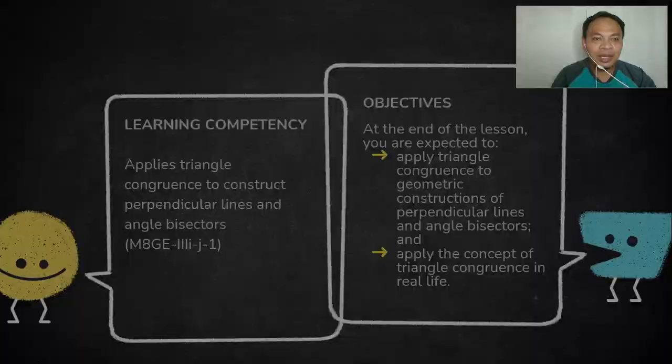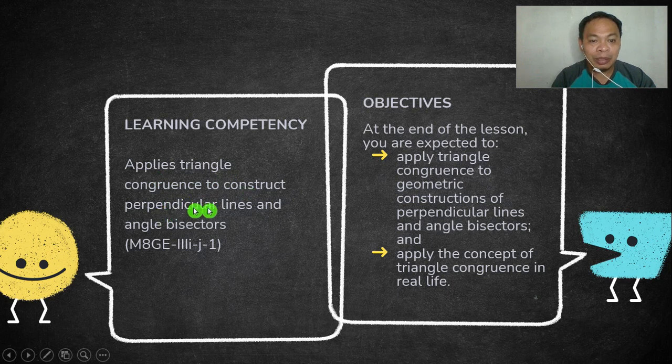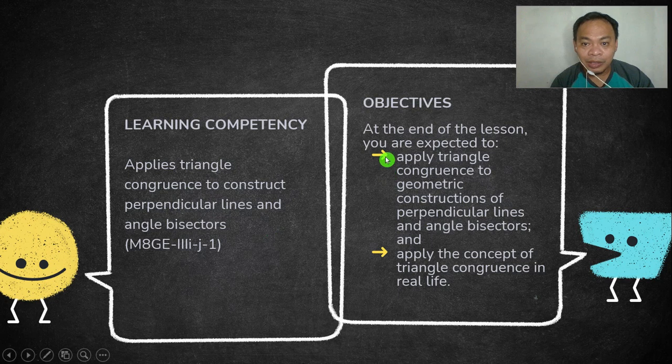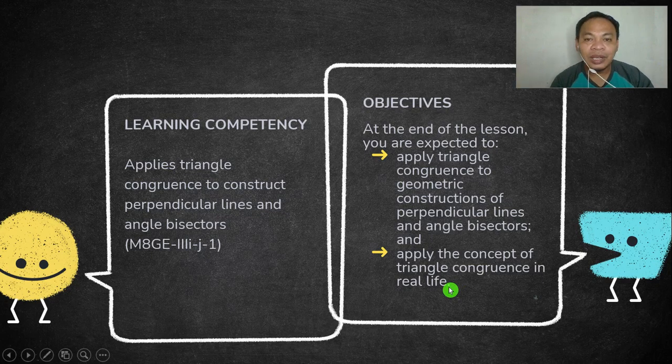Okay, so let's proceed. Our learning competency: applies triangle congruence to construct perpendicular lines and angle bisectors. Our objectives: at the end of the lesson, we're expected to apply triangle congruence to geometric constructions of perpendicular lines and angle bisectors, and apply the concept of triangle congruence in real life.